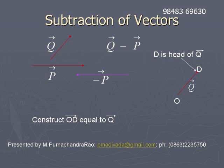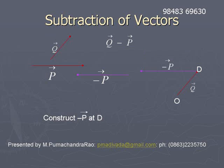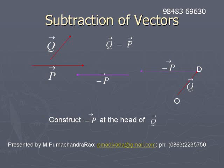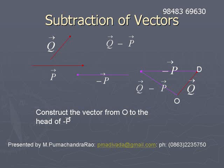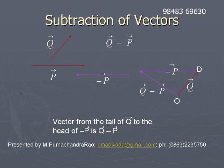The vector OD represents q̄, with the same direction and magnitude. O is the tail and D is the head of q̄. At the head of q̄, attach the tail of minus p̄. So minus p̄ is constructed at D. The vector obtained by joining the tail of q̄ to the head of minus p̄ is q̄ minus p̄.